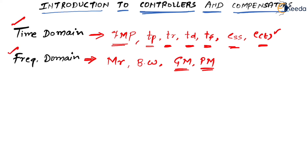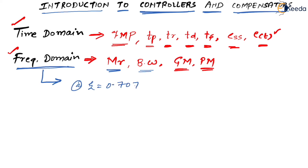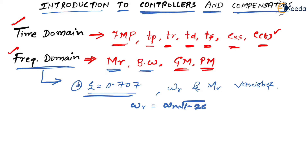Now we need to understand one very important thing. In the case of frequency domain, we cannot completely rely on MR and bandwidth. We had already talked about that at Zeta equal to 0.707, the resonant frequency omega_r and our MR vanish. Because the omega_r formula is omega_n into under root of 1 minus 2 Zeta squared, and if you square 0.707 you get approximately 0.5.